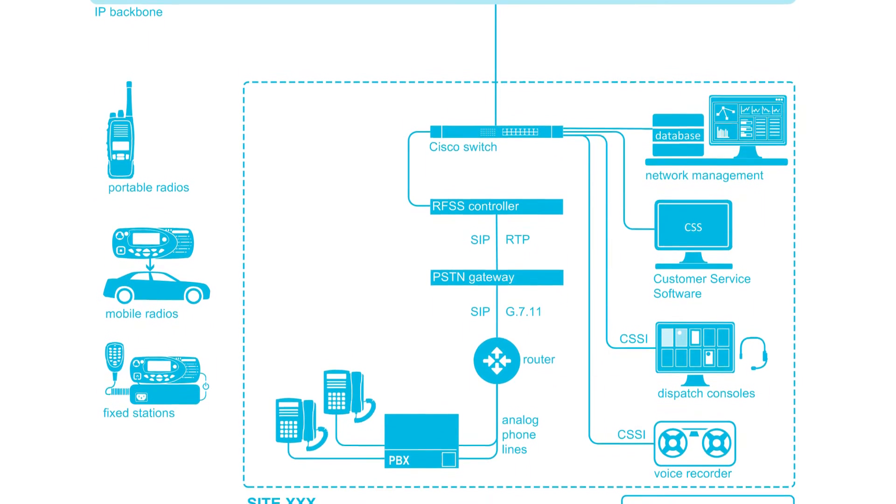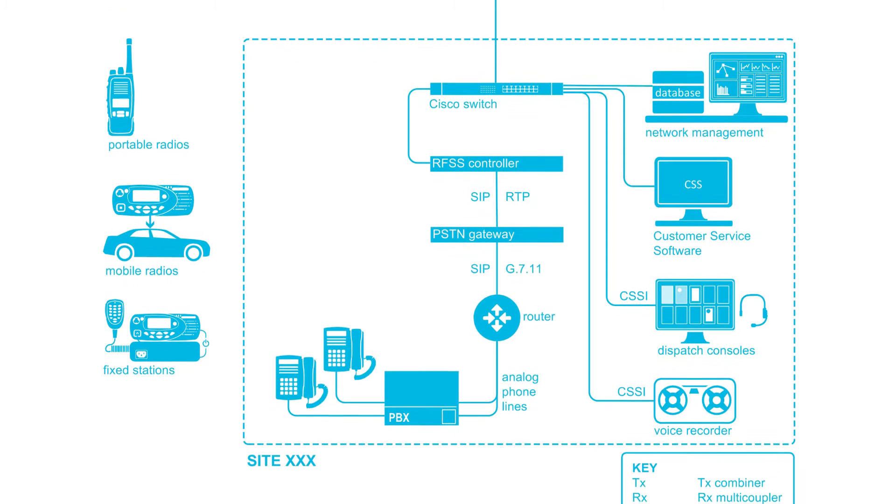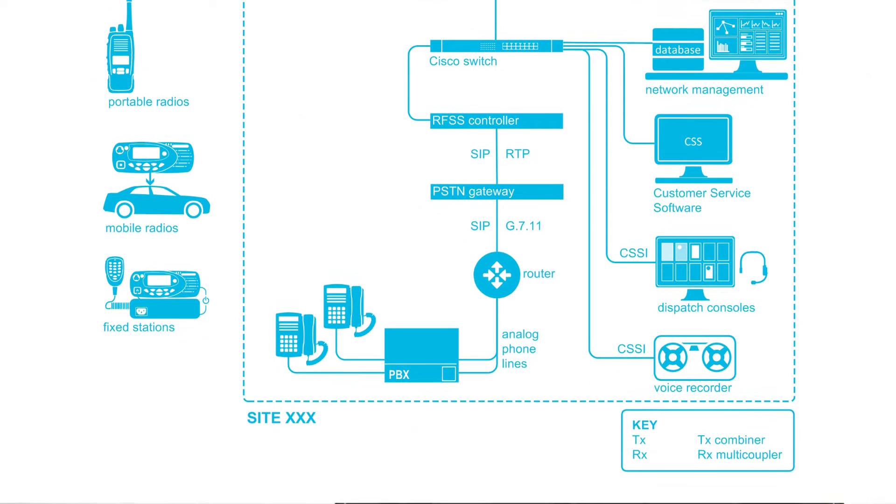The P25 standard also defines how many advanced features, such as encryption, IP data, location services, and many others, can be added to the radio network. This allows options to add functionality and capabilities to the radio network, while still allowing support for equipment from different vendors.